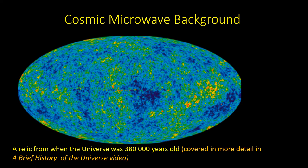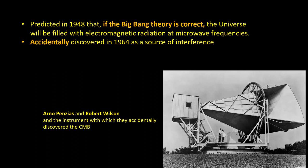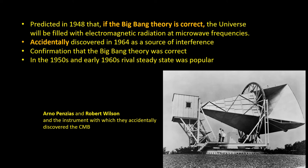Interestingly, the microwave background was predicted way back in 1948, but no serious attempt had been made to search for it. It was accidentally discovered by Arno Penzias and Robert Wilson in 1964 as a source of interference. Its discovery proved confirmation that the Big Bang theory is correct, because in the early 50s and 60s the rival steady state theory was popular.